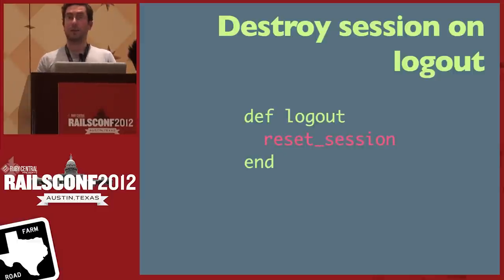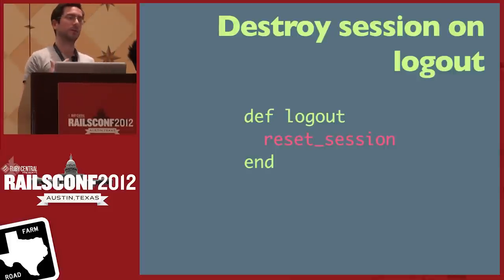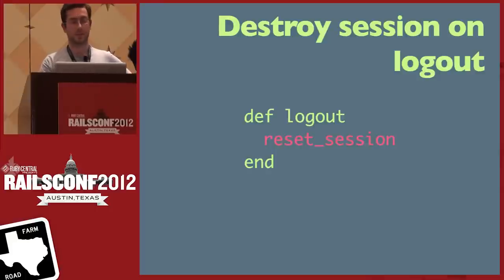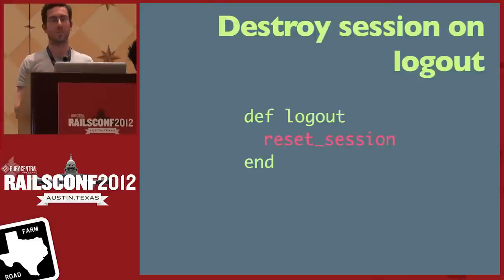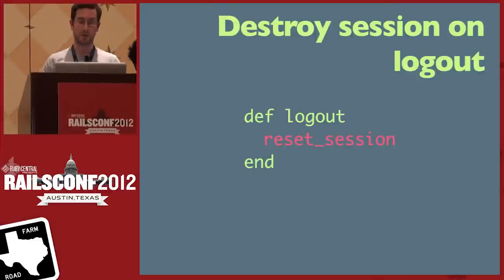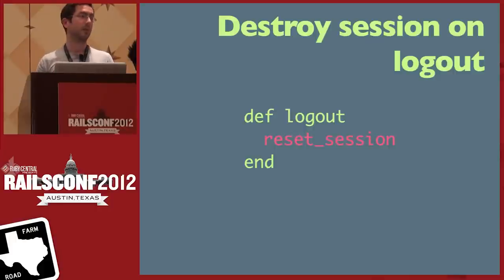When someone logs out, make sure you actually kill the session — make it invalid so it can't be reused. Be aware: if you're using the cookie store, it just stores a hash on the client side, so calling reset_session doesn't actually kill that session server-side. If someone has copied the cookie, the user logs out, reset_session is called and the cookie is cleared, but the session is still valid — you can present that cookie again and the session comes back. If this is a problem for your app, use the cache store or ActiveRecord store instead, where reset_session does kill it.